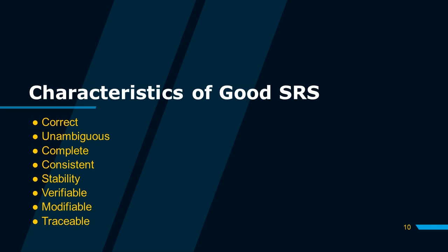Consistent means no subset of individual requirements in the SRS conflict. Stability means an identifier is attached to every requirement to indicate its importance or stability. Verifiable means every requirement stated therein should be verifiable. Modifiable means its structure and style are such that any change to the requirements can be easily made consistently while retaining structure and style. Traceable means the origin of each requirement is clear and it facilitates referencing each requirement in future development or enhancement documentation.